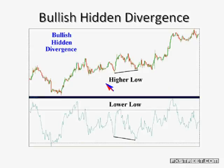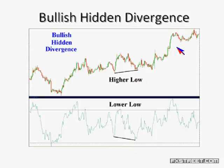Bullish hidden divergence is simply the opposite: higher low in price — what is a higher low in price but uptrend support. Higher low in price defines an uptrend, and then we have a lower low in the oscillator. That's a disagreement, a divergence, an imbalance. How does price correct that disagreement? By continuation of the uptrend. Hidden divergence is less intuitive, almost counterintuitive. However, many people think it's higher probability because it's a with-the-trend move, as opposed to regular divergence, which is an against-the-trend or reversal move.